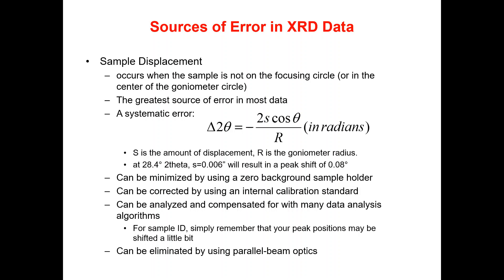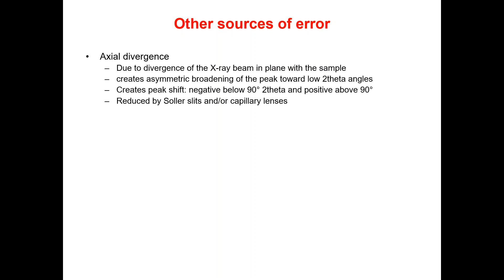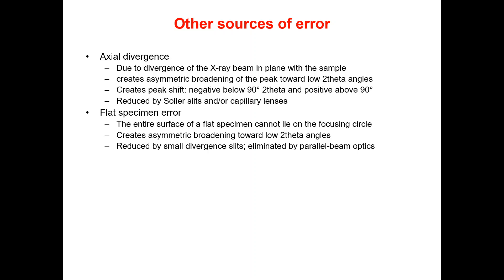Another source of error is axial divergence. Axial divergence occurs due to the divergence of the X-ray beam in the plane of the sample, which creates asymmetric broadening of the peak toward lower theta angles. It creates peak shift towards negative below 90° 2θ and positive above 90° 2θ. This type of error can be reduced by Soller slits or capillary lenses.